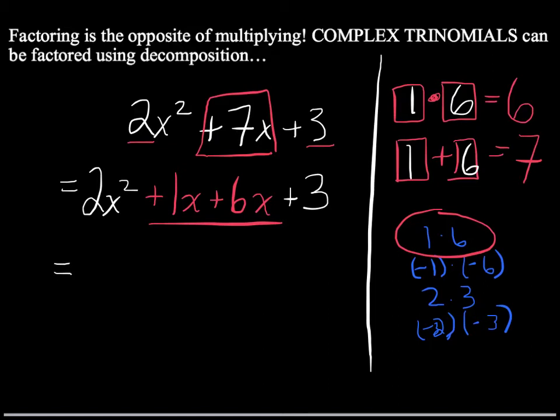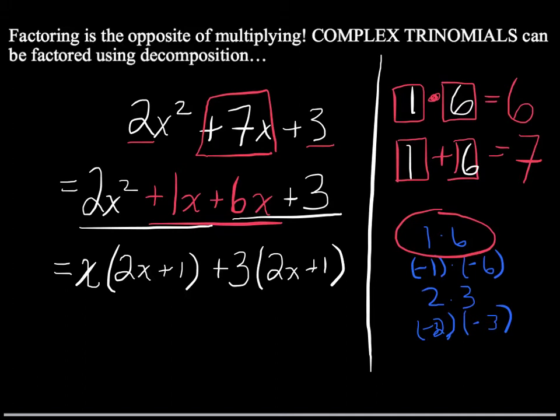Let's continue. Looking at the first two terms, 2x² and 1x, I notice the common factor is x. So x times (2x + 1) will give me 2x² + 1x. And for 6x and 3, the common factor is 3. And 3 times (2x + 1) gives me those two terms.